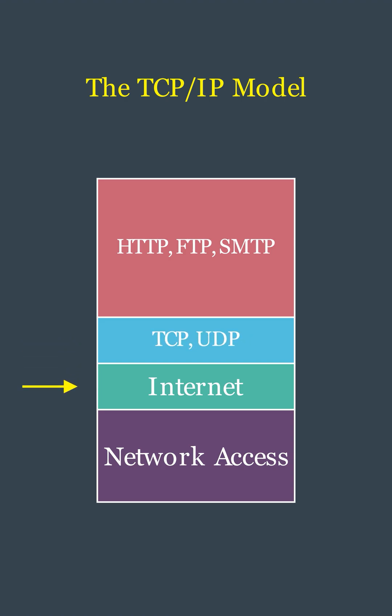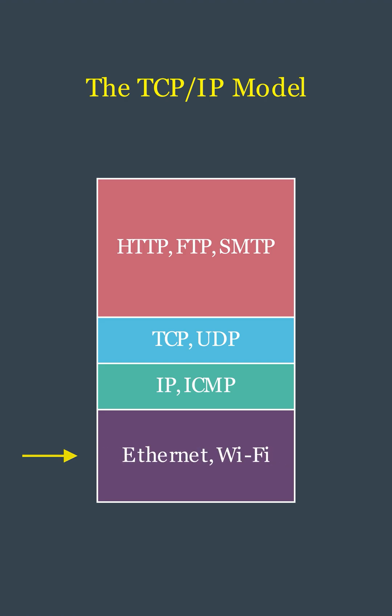The internet layer handles the addressing and routing of data packets. The key protocol is IP, which determines the best path for data to travel across the network. It also includes protocols like ICMP. The network interface layer, also known as the link layer, is the lowest layer. It deals with the physical transmission of data over network hardware, such as Ethernet or Wi-Fi, and includes protocols like ARP to map IP addresses to physical hardware addresses.